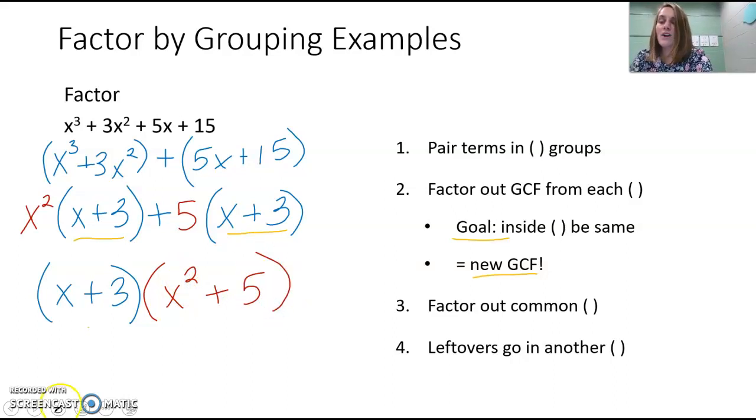x + 3, the quantity x + 3, times the quantity x² + 5, are the factors of that long polynomial that we were given. Remember, you can always check factoring by doing distributive property, by foiling in this case. If you foil those two binomials, you should end up with the original polynomial.